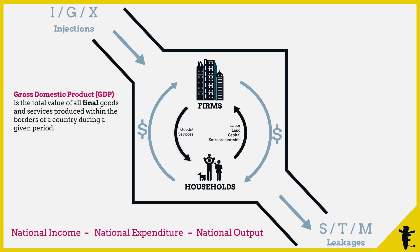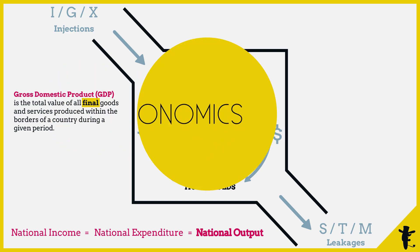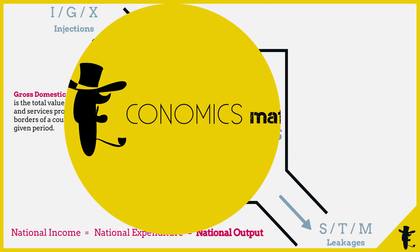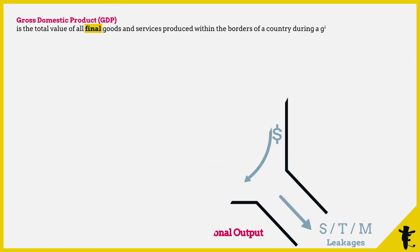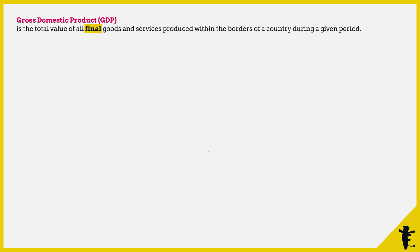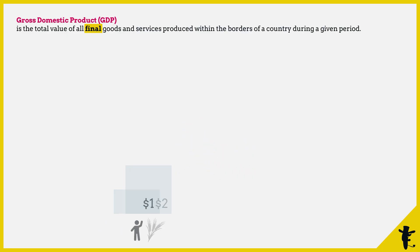So how do we measure GDP? We can measure the total output — the total final goods and services. Why only final goods and services? Take the production of sandwiches as an example.